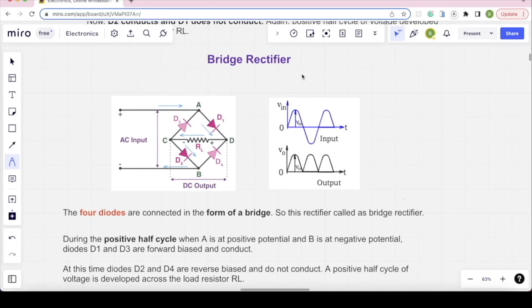Next is bridge rectifier. It is connected in the form of bridge, that means bridge rectifier. For positive half cycle, A is positive, B is negative. So D1 forward bias, D3 forward bias. Current will flow in this direction. D2, D4 will reverse bias, so will not conduct. Positive half cycle will be output.